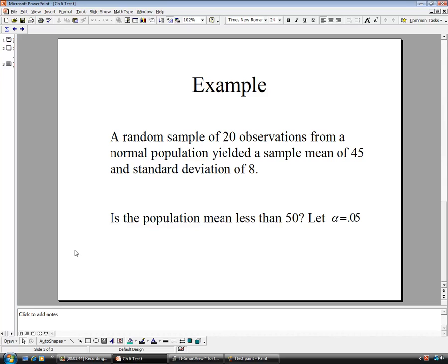So here's an example. We have a random sample of 20 observations from a normal population and it yielded a sample mean of 45 and a standard deviation of 8. Question, is the population mean less than 50? We're going to let alpha equal 0.05. So the information we have here is n is 20, x-bar is 45, and s is equal to 8.